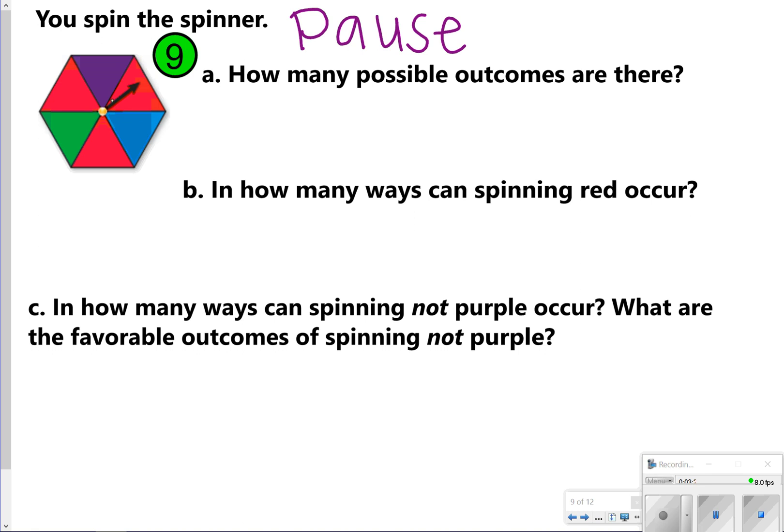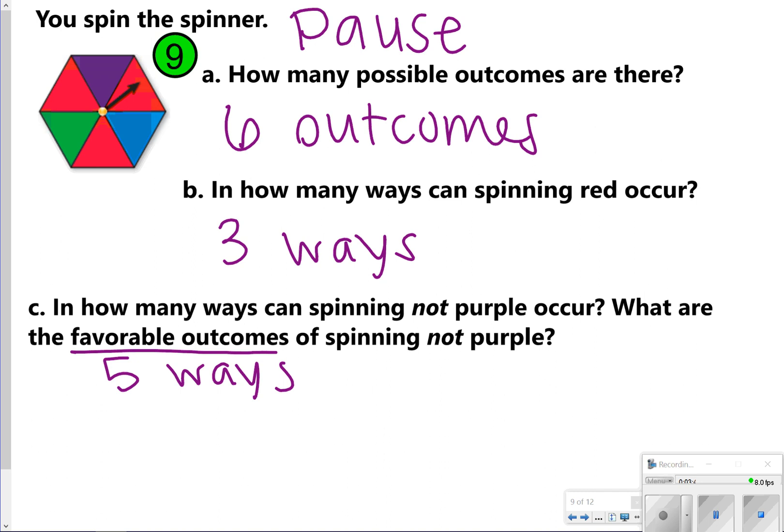Okay, in number nine A, you should have listed there are six outcomes. You have three red, one purple, one blue, and one green. In the letter B, in how many ways can spinning red occur? That would be three ways of spinning red. In letter C, how many ways can spinning not purple occur? That can happen five ways. What are the favorable outcomes of spinning not purple? That means you would just list it. I have red times three, green, and blue. So once you're done, you should be able to count five ways. Three red, one green, one blue equals the five ways.